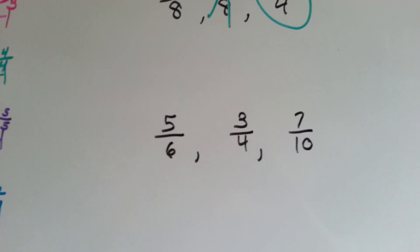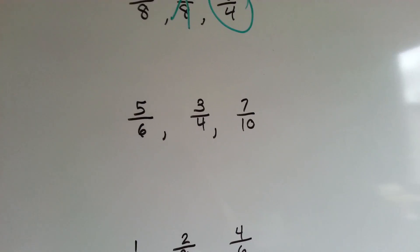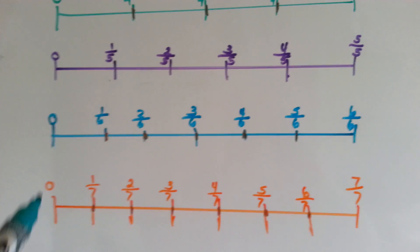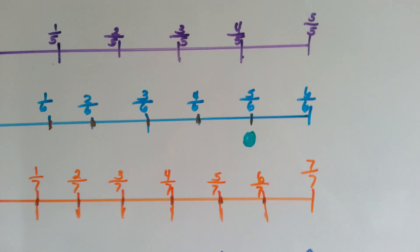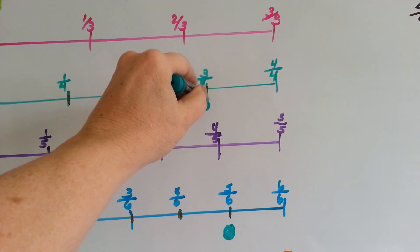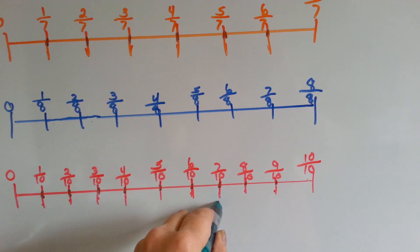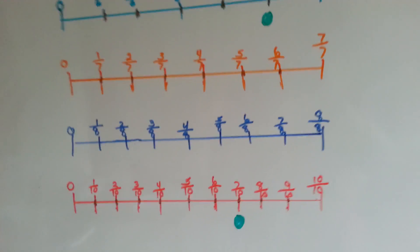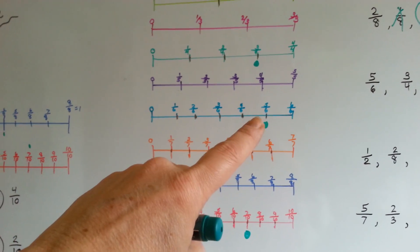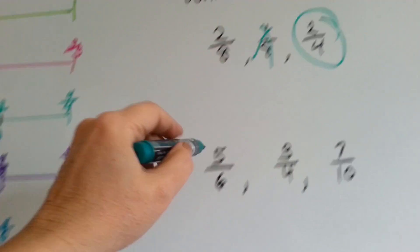Now which is bigger: 5 sixths, 3 fourths, or 7 tenths? Let's find each one on the number lines. Where's 5 sixths on the sixths number line? It's right there. Where's 3 fourths? Here it is. And where's 7 tenths? 7 tenths is right here. Now I'll step back and you'll be able to find the green dots to see who the winner is. This green dot, this green dot, and this green dot. This one's bigger — it's closer to the end. So 5 sixths is the bigger one — he's the winner.